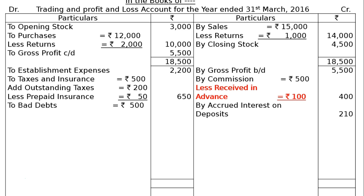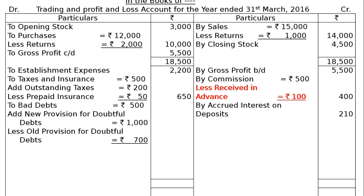Next is bad debts Rs 500. As per part 4, provision for doubtful debts is to be maintained at Rs 1,000. The bad debt Rs 500 is already incurred within the year, and Rs 700 is the old provision from last year. The new provision per adjustment part 4 is Rs 1,000. So: bad debt Rs 500, add new provision for doubtful debt Rs 1,000, totalling Rs 1,500, less old provision for doubtful debt Rs 700. In the final column we have Rs 800 under bad debts as an expenditure or loss.